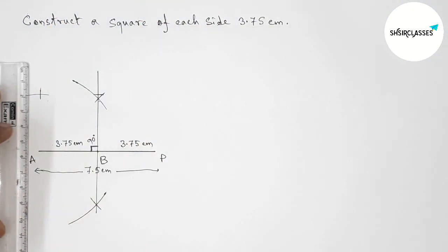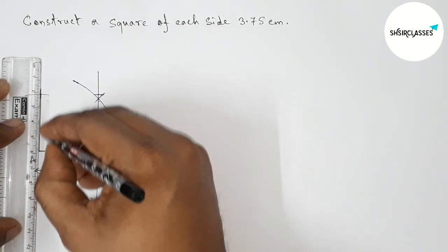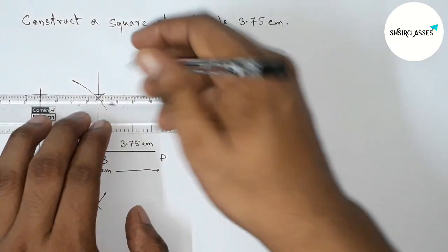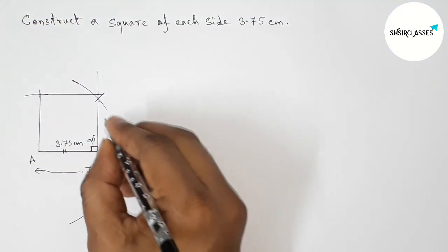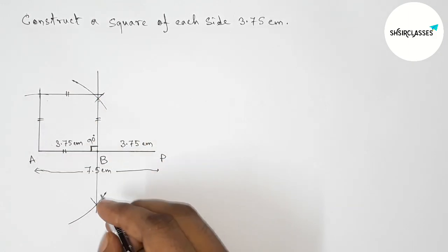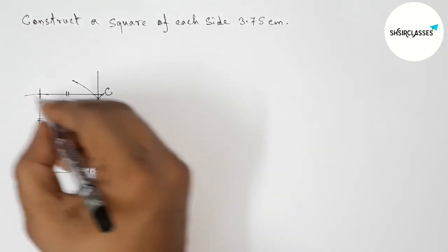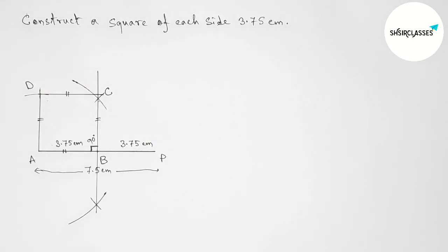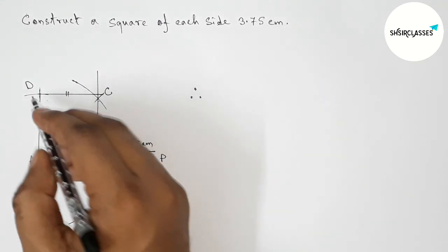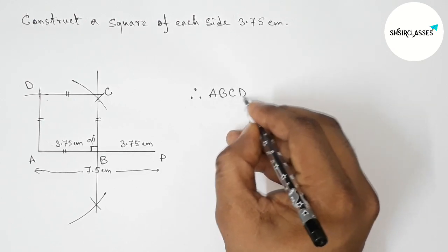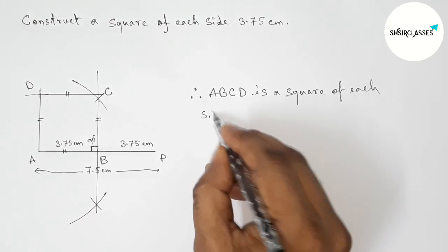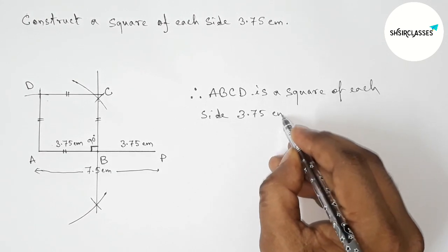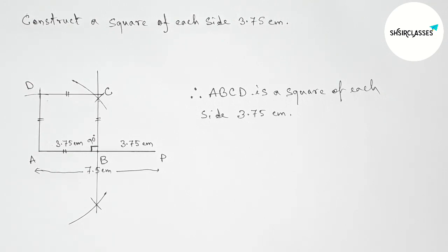So now first joining this side, then joining this side to get the square. So here all the sides are equal, and here ABCD, therefore ABCD is a square of each side 3.75 centimeter. So by this way you can construct this square. That's all, thanks for watching.